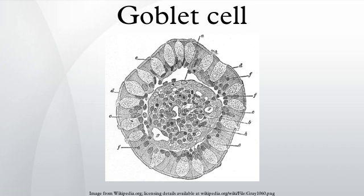The goblet cell is a glandular simple columnar epithelial cell whose function is to secrete gel-forming mucins, which are the major component of mucus. The goblet cells use both apocrine and merocrine methods for secretion.